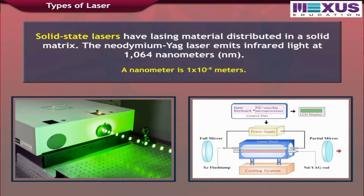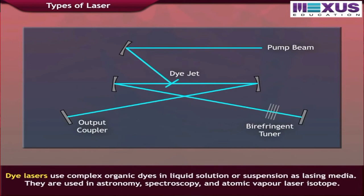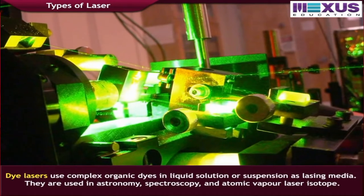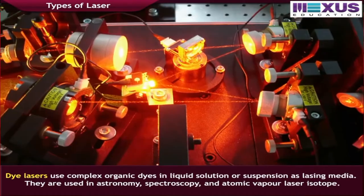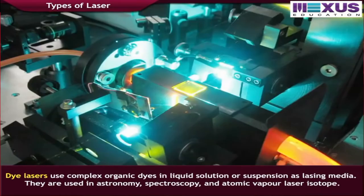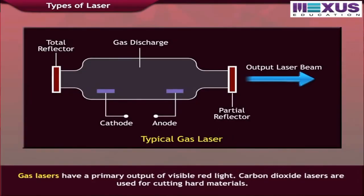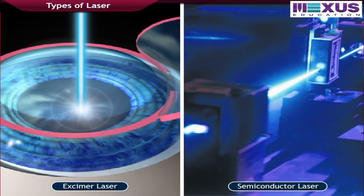Solid state lasers have the lasing material distributed in a solid matrix. The Nd:YAG laser, which is a solid laser, emits infrared light. Dye lasers use complex organic dyes in liquid solution or suspension as the lasing media; these lasers are used in astronomy, spectroscopy, and atomic vapor laser isotope separation. Gas lasers have a primary output of visible red light, and carbon dioxide lasers, which are gas lasers, are used for cutting hard materials.